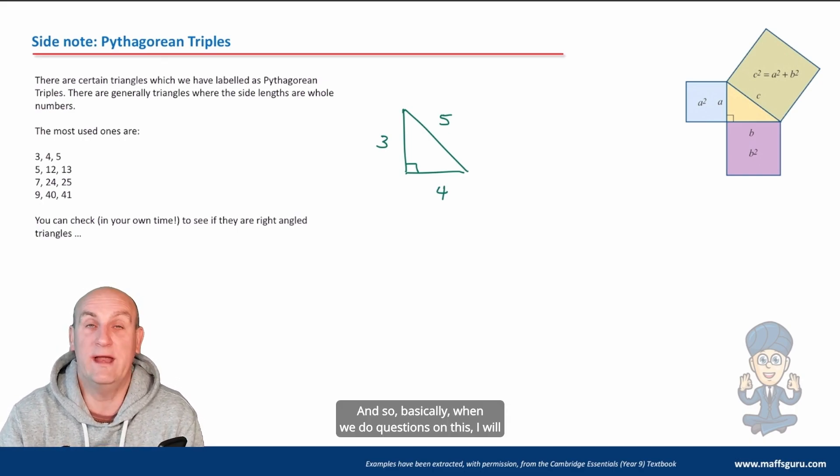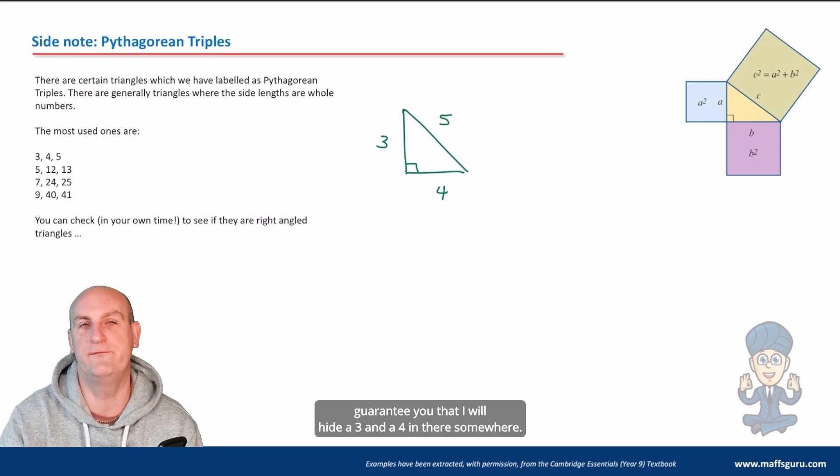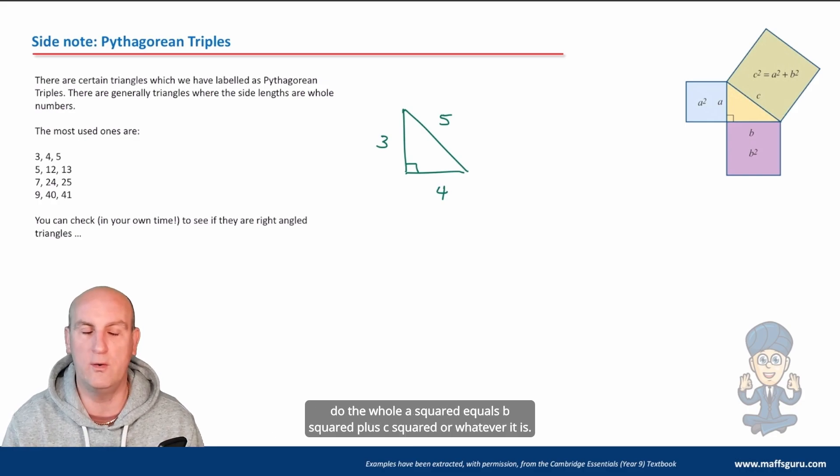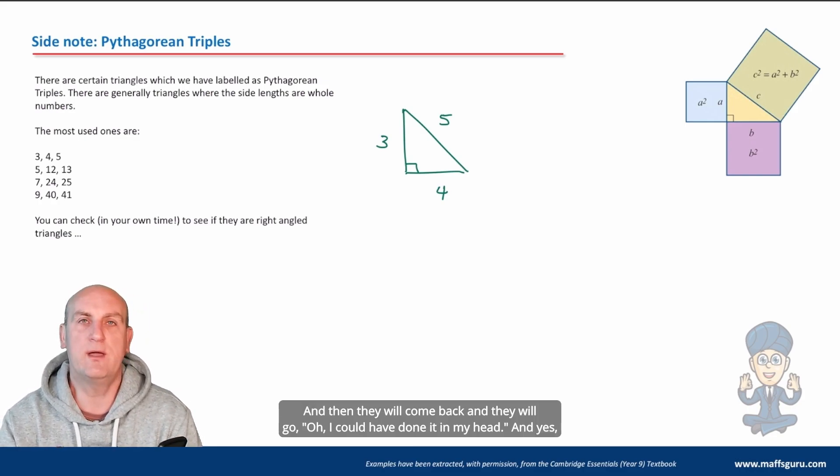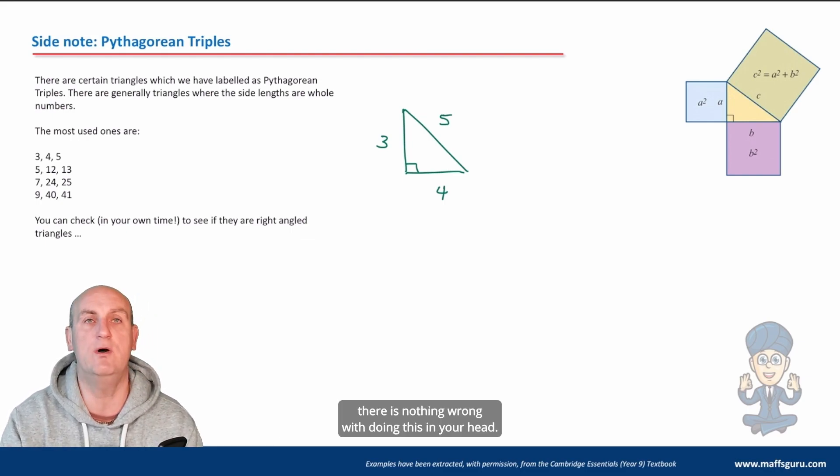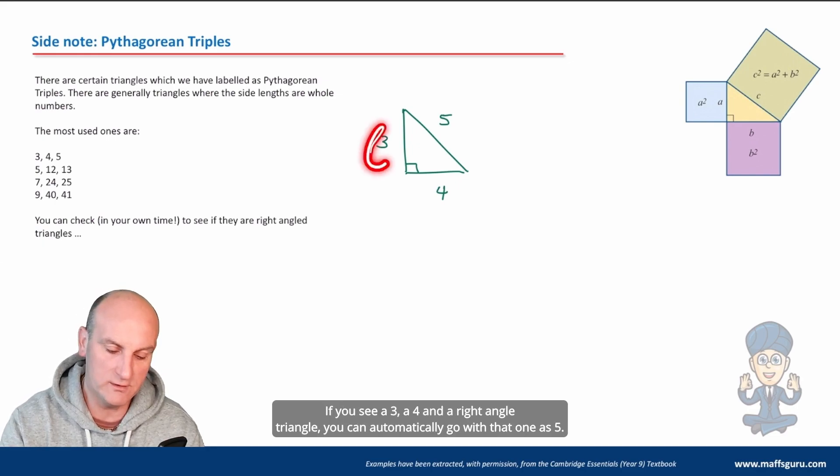So basically, when we do questions on this, I will guarantee you that I will hide a 3 and a 4 in there somewhere. And people will go away and do the whole A squared equals B squared plus C squared or whatever it is. And then they'll go, oh, I could have done it in my head. And yes, there is nothing wrong with doing this in your head. If you see a 3, a 4, and a right angle triangle, you can automatically go with that one as 5.